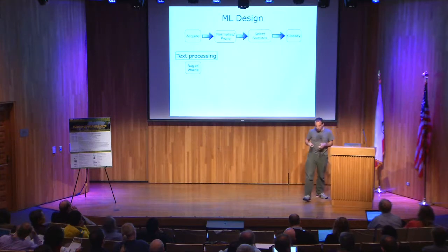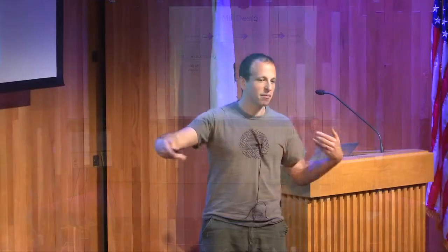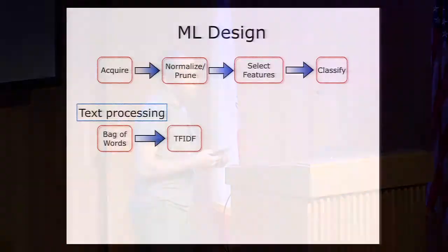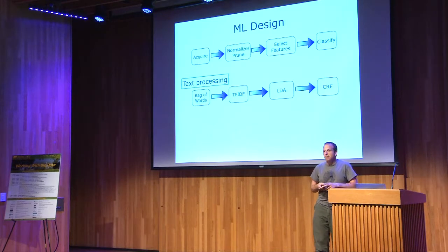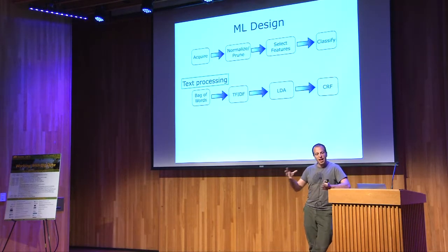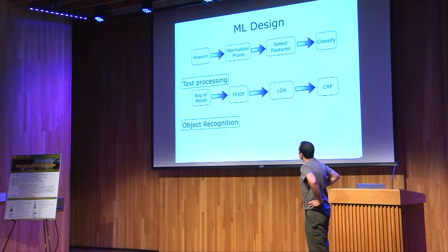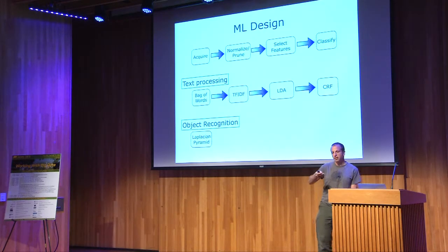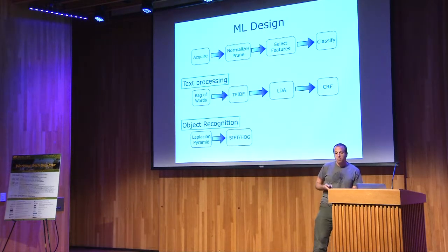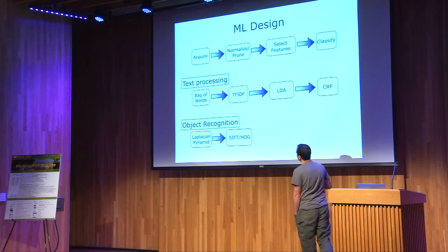As was mentioned in Alyosha's talk, you would take some vocabulary, take a text document, and turn it into a vector — basically just a histogram of the words used in that document. Then you would run something called TFIDF, which is just a way of normalizing overly frequent words against uncommon ones. Then you might run something like latent discriminant analysis, and then maybe something like a conditional random field to do part-of-speech tagging or sentiment analysis.